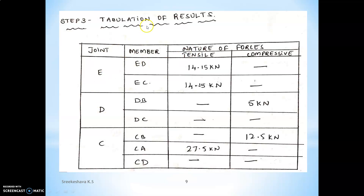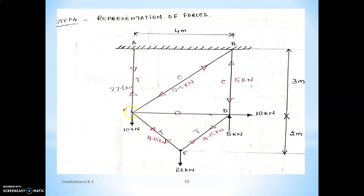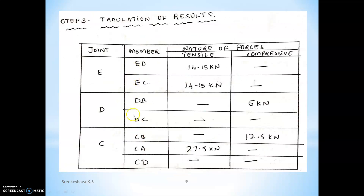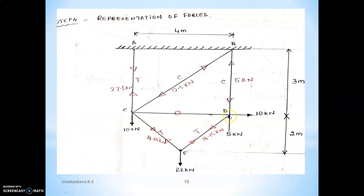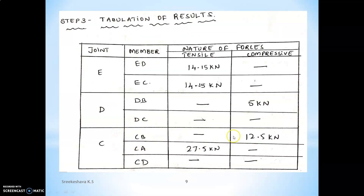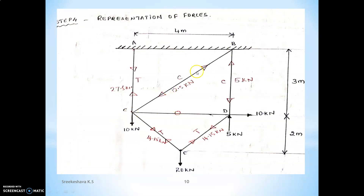Tabulate the results: joint, member, nature (tensile or compressive). For representation: tensile means the force acts away from the joint at both ends of the member — for example, ED is tensile so arrows point away from both joints. Compressive means the force acts towards the joint — for example, CB is compressive 12.5 kN, so arrows point towards both joints. Represent all forces similarly.